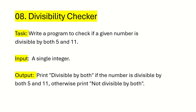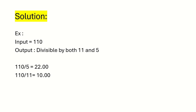I hope you understood the question. Let's see how we can solve this problem. For example, if the user gives the integer value 110, we have to divide that by 5 and 11 at the same time. 110 divided by 5 gives 22.00 — the decimal point is .00, meaning it is completely divisible by 5. Similarly, 110 divided by 11 gives 10.00, so it is also completely divisible. When we get a decimal point of .00, we can say it is completely divisible by that number.